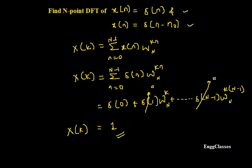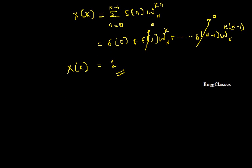So X(k) = 1 as the final answer. Now I will consider the second part of this numerical, wherein x(n) = δ(n - n₀).